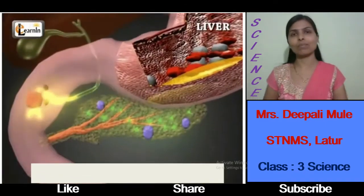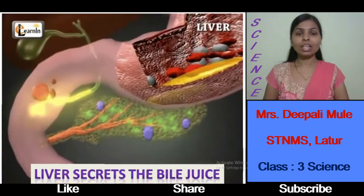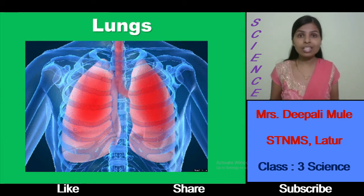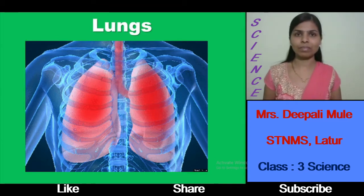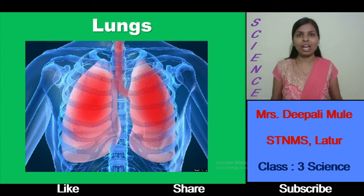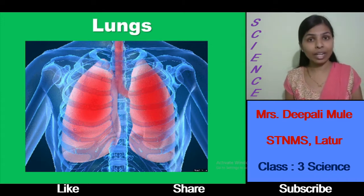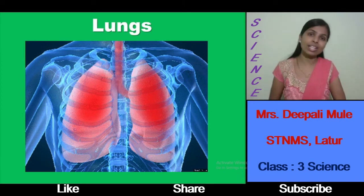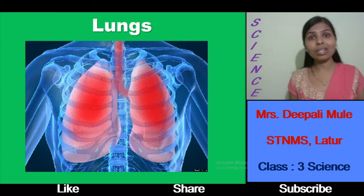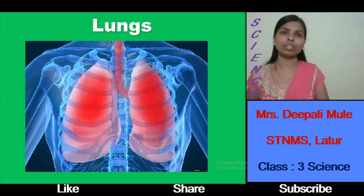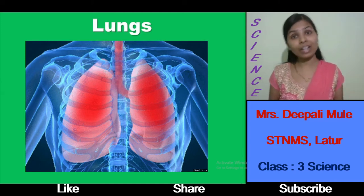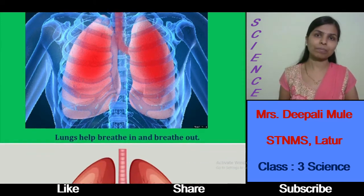The next organ is the lungs. Lungs are very important — they help in the respiration process. The respiration process means taking air inside our body and afterwards releasing that air outside our body. This means that humans and animals take oxygen inside their body and release carbon dioxide.